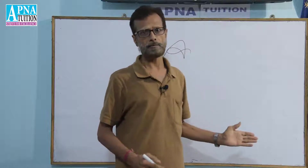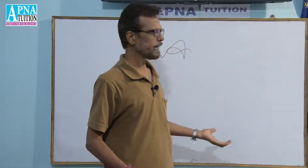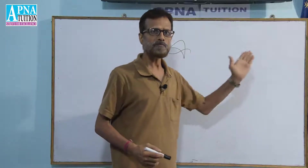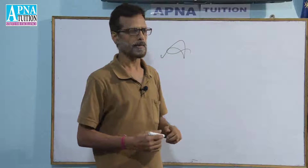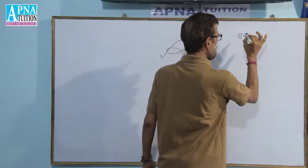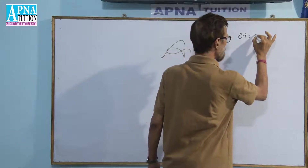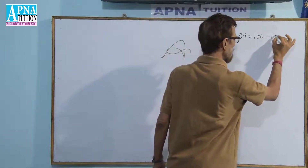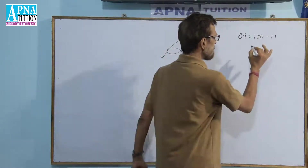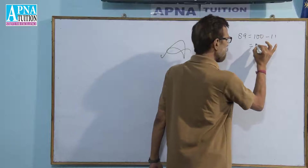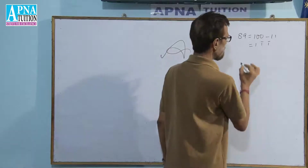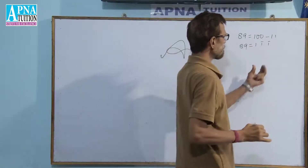The same table of 89 can be done in a new way, and it is comparatively easier than the previous one. For example, 89 can be written as 100 minus 11, and as we discussed previously, this can be written as 1-bar 1-bar, meaning 89 equals this representation.